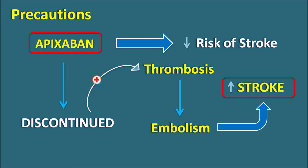Use of apixaban is a sensitive balance between hemorrhage and thrombosis. Proper use of apixaban can reduce both the risk of bleeding and the risk of thrombus formation.